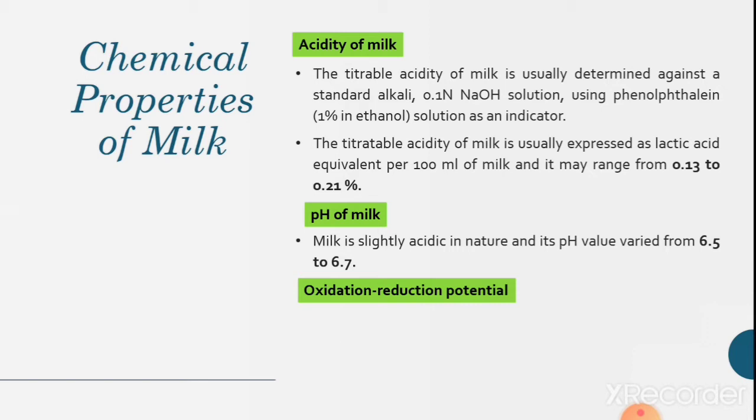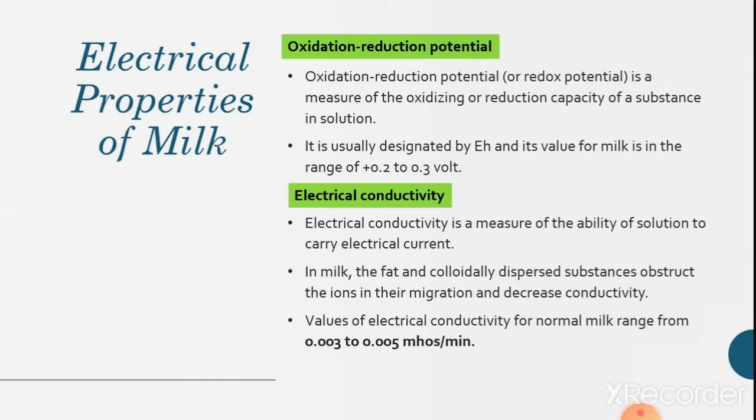The next chemical property of the milk is oxidation reduction potential. Oxidation reduction potential or redox potential is a measure of the oxidizing reduction capacity of a substance in solution. Oxidation reduction is usually designated by Eh and its value for milk is in the range of plus 0.2 to 0.3 volts.